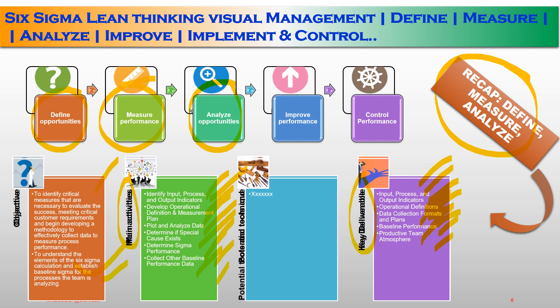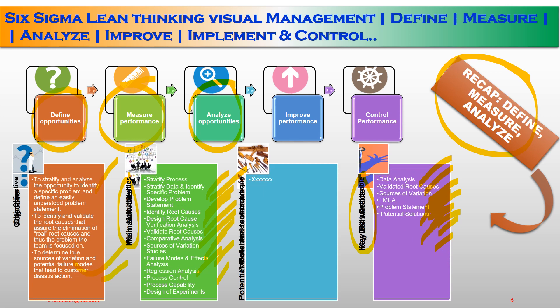In the Analyze phase, we stratify and analyze opportunities to identify specific problems and define a clear problem statement. We identify and validate root causes to assure elimination of real root causes and determine true sources of variation, potential failures, and root causes of customer dissatisfaction. Main activities include: stratify data, identify specific problems, develop problem statements, identify and verify root causes, conduct comparative analysis, source of variations analysis, Failure Modes and Effects Analysis (FMEA), regression analysis, process control, process capability, and design of experiments. Key deliverables are data analysis, valid root cause, source of variation, FMEA, problem statement, and potential solutions.